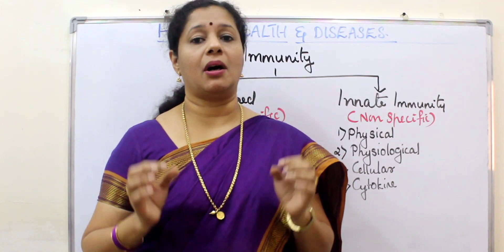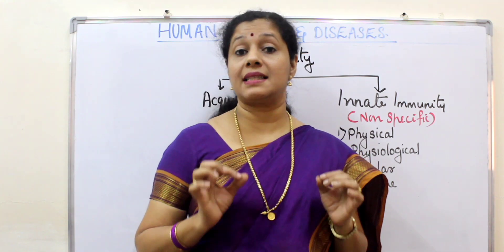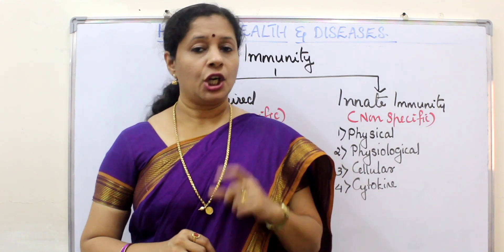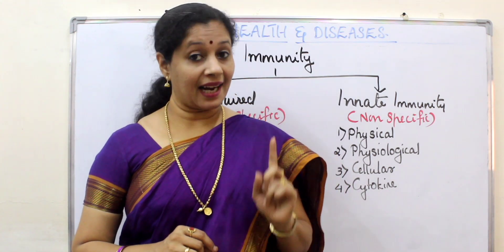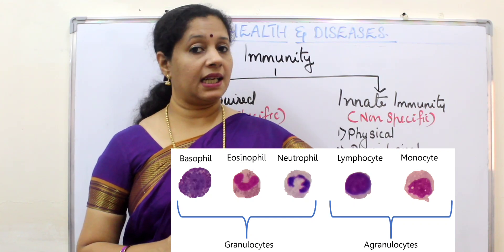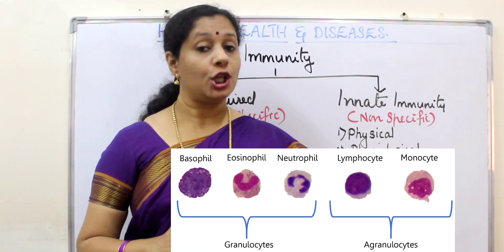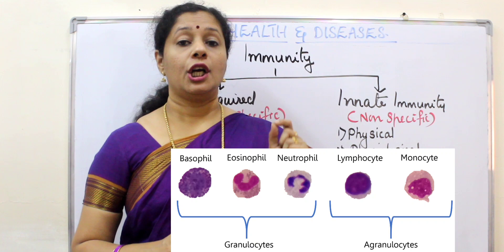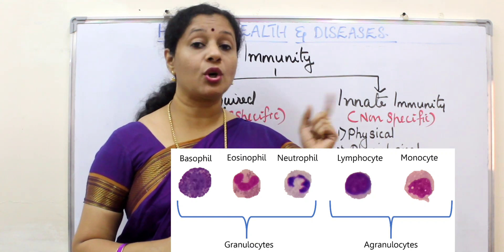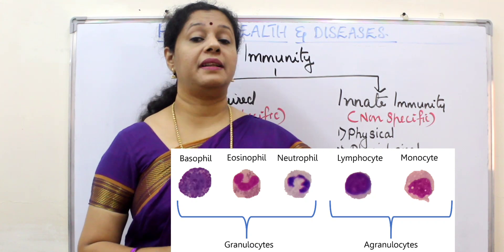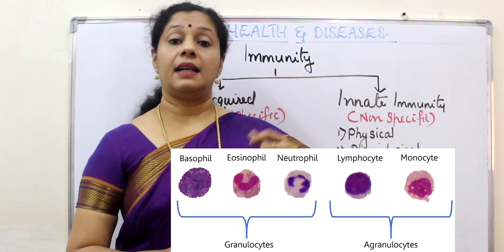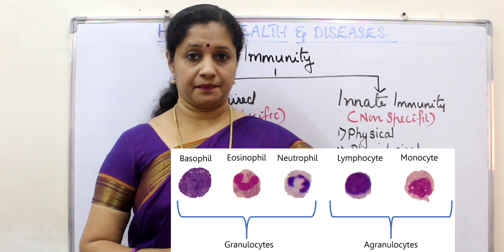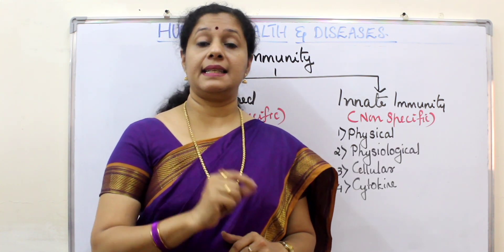White blood cells play a crucial role in providing immunity. Do you remember the types of WBC? Granulocytes and agranulocytes. Granulocytes are three types: eosinophils, basophils, and neutrophils. Agranulocytes are monocytes and lymphocytes. Of these, neutrophil from granulocytes and monocyte from agranulocytes are both phagocytic in nature. The lymphocyte cells are very crucial in providing immunity — they are of two types: B lymphocytes and T lymphocytes.